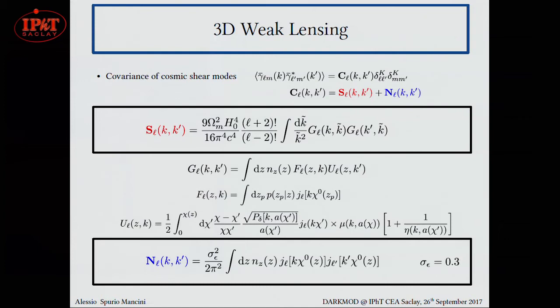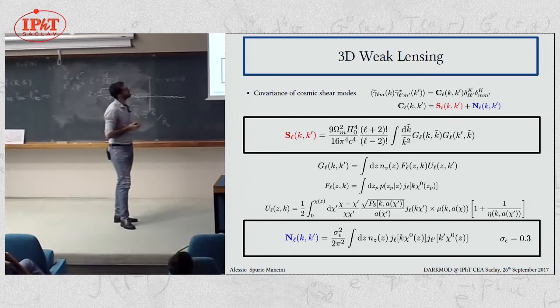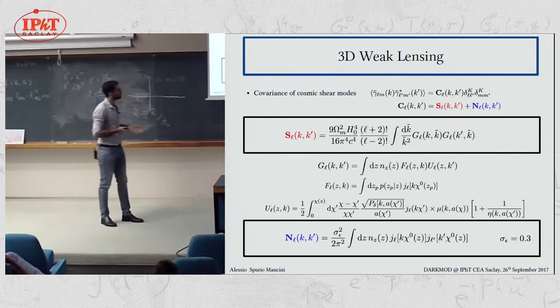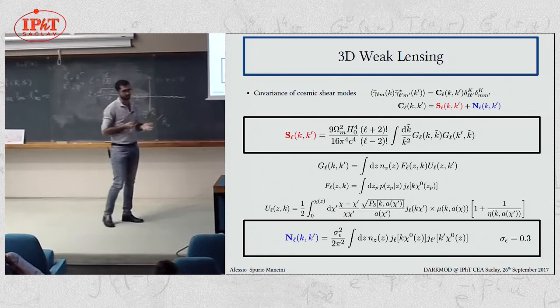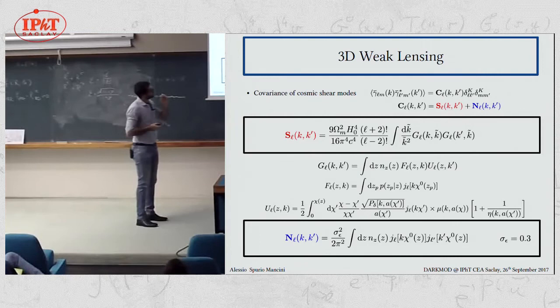What we really care about is not the average of this field, because this would be zero, but the covariance of different modes. And the point about the covariance is that it can be split into a signal part and a noise part, where the noise part is essentially given by the fact that we are making a Poisson sampling of a smooth field, and so it's dominated by the variance in the intrinsic ellipticity in lensing, which is typically of order 0.3.